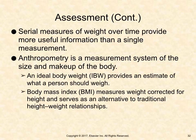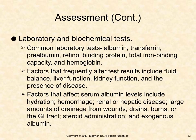The patient should be weighed at the same time every day, on the same scale, and with the same clothing or linen. Anthropometry is a measurement system of the size and makeup of the body. An ideal body weight provides an estimate of what a person should weigh. Body mass index measures weight corrected for height and serves as an alternative to traditional height-weight relationships. Laboratory and biochemical tests to assist with evaluating nutritional status include albumin, transferrin, prealbumin, retinol-binding protein, total iron-binding capacity, and hemoglobin. Factors that frequently alter test results include fluid balance, liver function, kidney function, and the presence of disease.